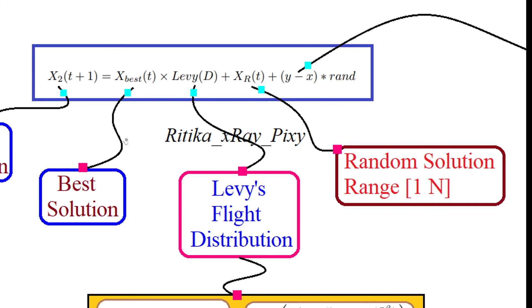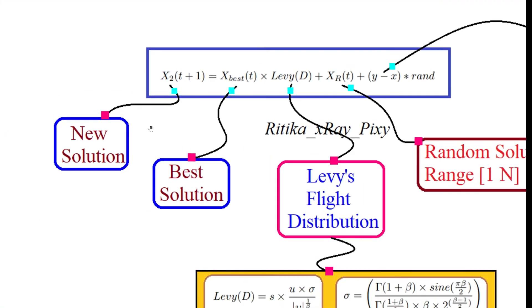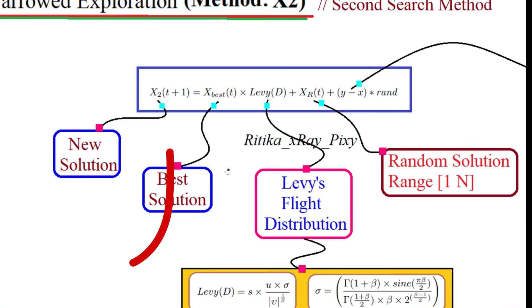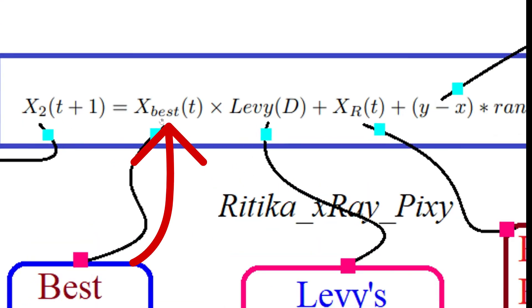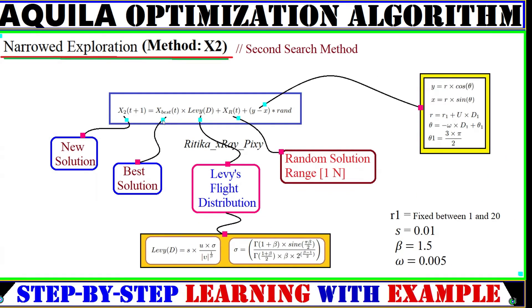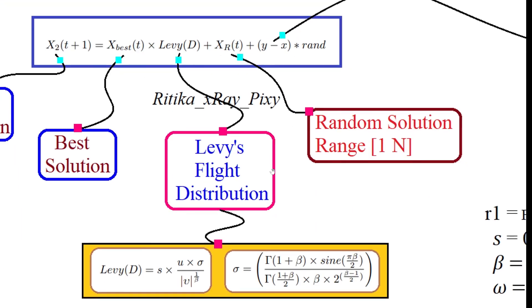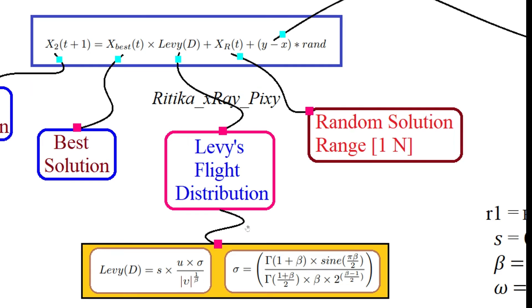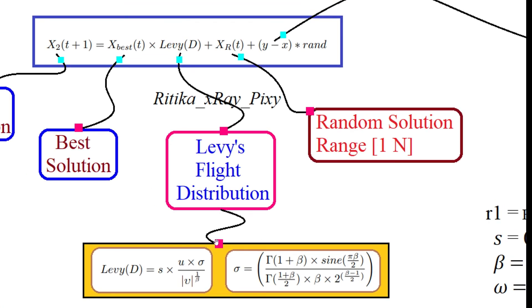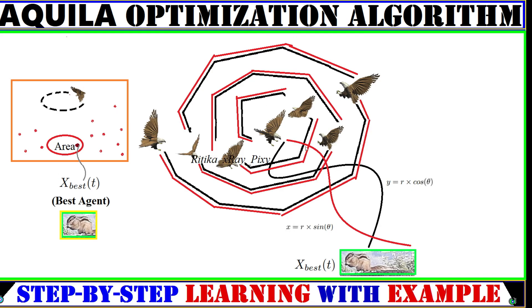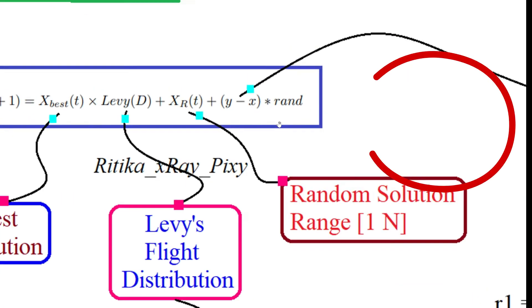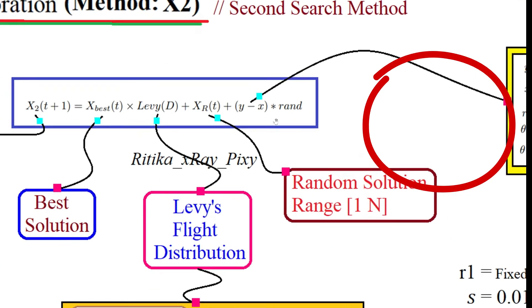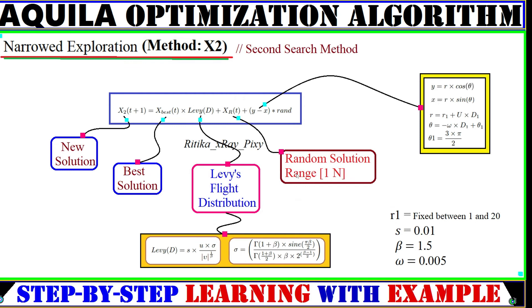This is the mathematical model for the second behavior. The new solution uses the best agent as the target. Levy's flight is used here, and using the corresponding equation we can calculate the value for the Levy's flight distribution. We also have spiral moves represented by a dedicated equation. Rand is the random value used in this model.